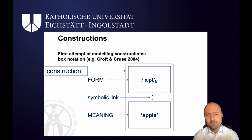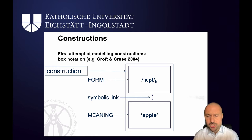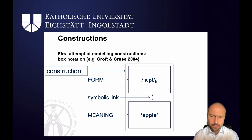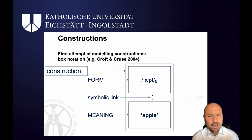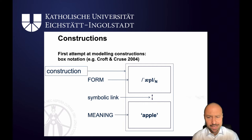This form is linked to a mental concept of an apple, which includes rich encyclopedic knowledge: what an apple looks like, where you find them, what they taste like and so on. The relationship between the two is a symbolic link. Now another thing that's a bit hidden in this notation is the fact that apple is a noun — we see this on the form level in the little subscript n.